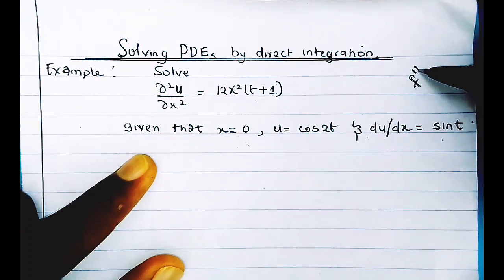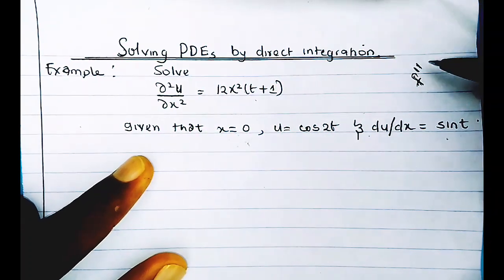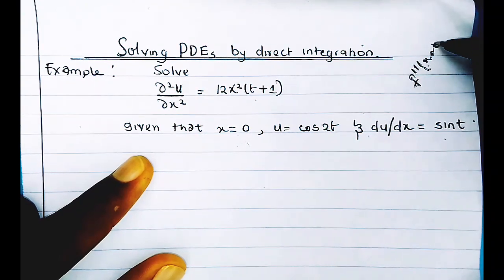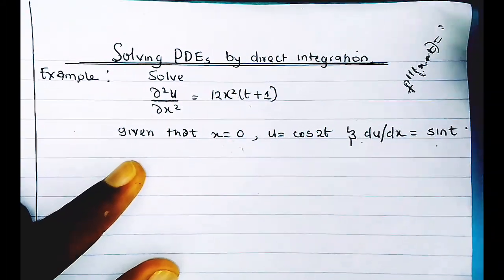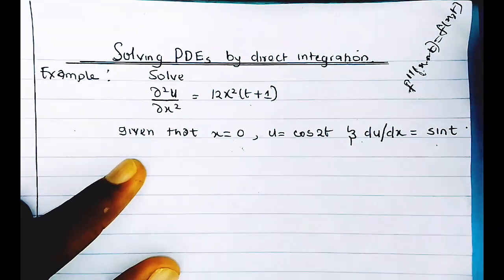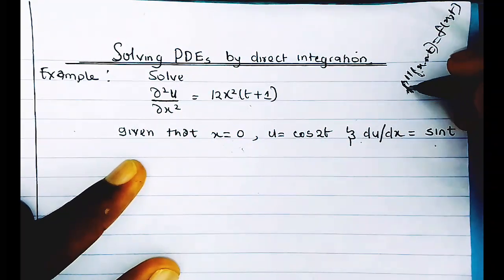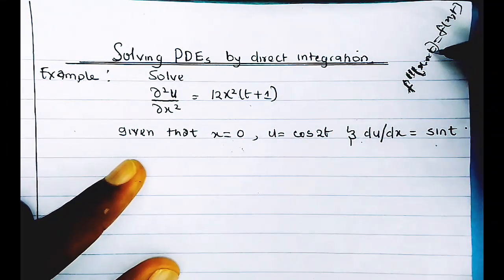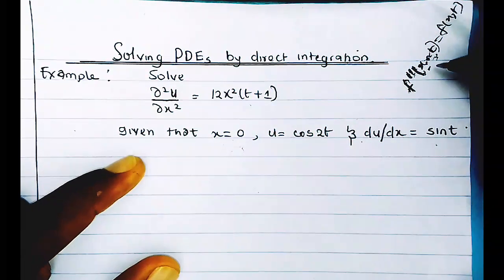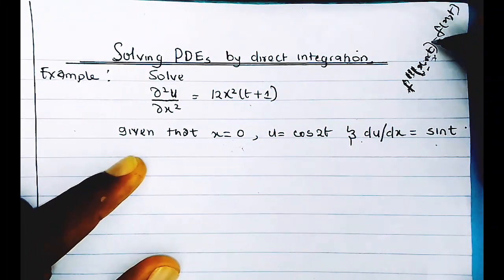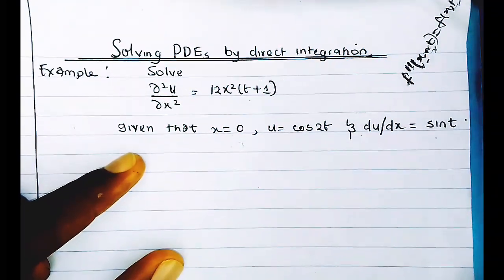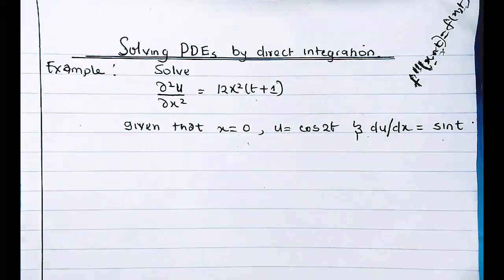The PDE in question is, for example, a second-order derivative — meaning a second-order differential equation — of a function of the independent variables. It can be x, t, or both, and it will be equal to a function of those two independent variables. We can then apply direct integration.